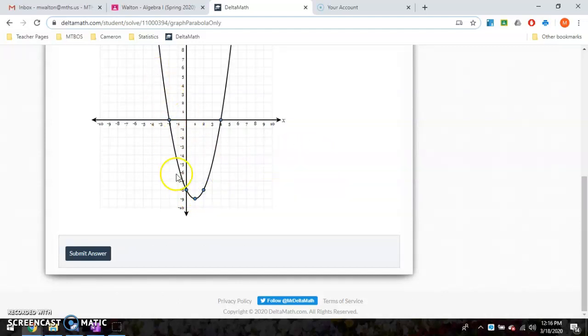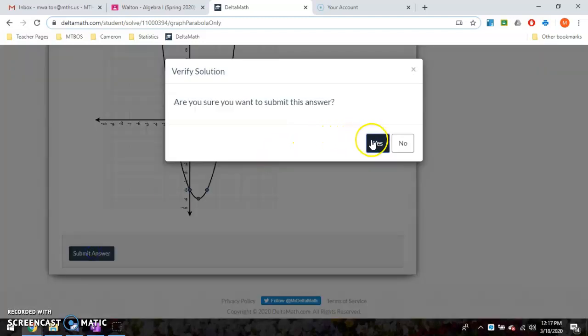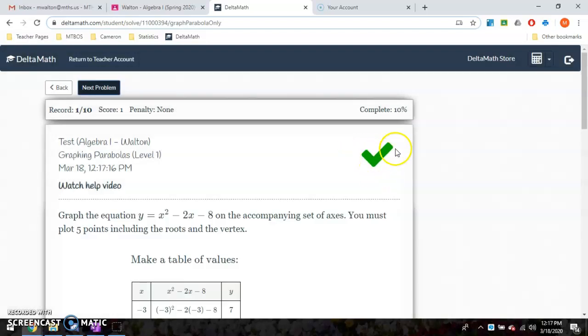And it's beautiful. We have our graph. We have our two intercepts from our intercept form. We had this from standard form. Our vertex was from vertex form. And then finally, since my stretch was up one, I simply went up one, up one. And there is our parabola. Submit answer. Of course I do. I know it's right. And you have your check mark.